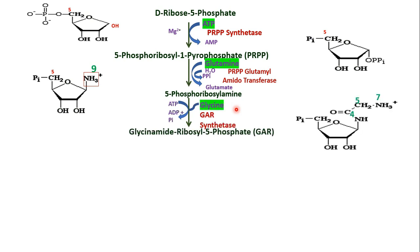In the next step, glycine condenses with phosphoribosyl amine in the presence of ATP to form glycine amide ribosyl 5-phosphate. You can see in the structure that N9 was already there; now glycine adds C4, C5, and N7. This ribosyl amine becomes glycine amide ribosyl 5-phosphate, abbreviated as GAR. The enzyme is GAR synthetase.